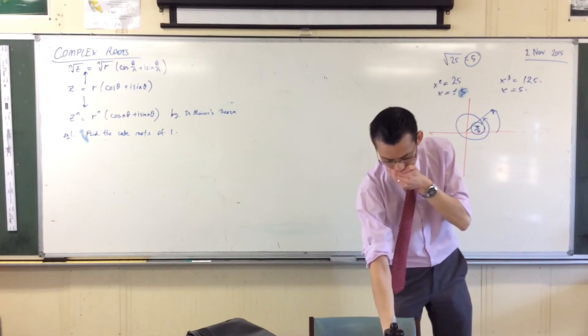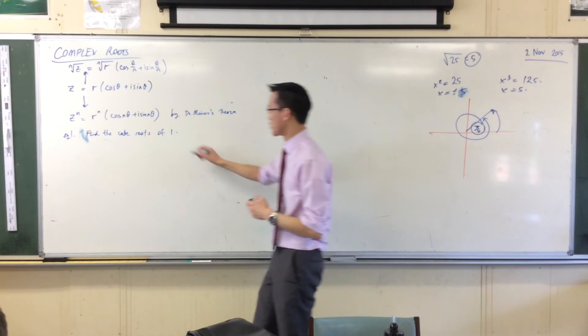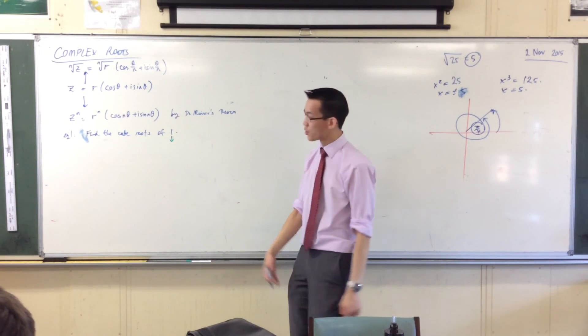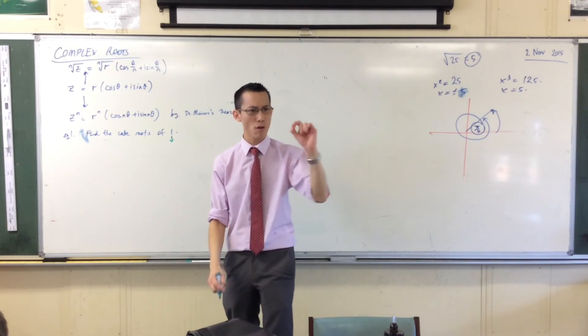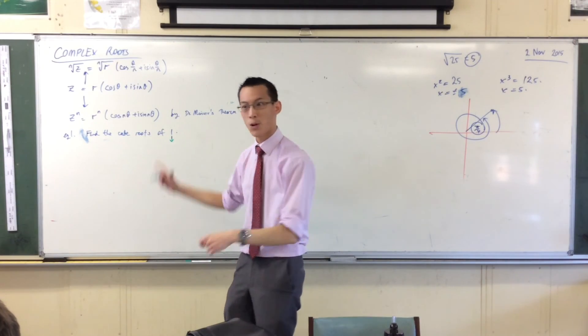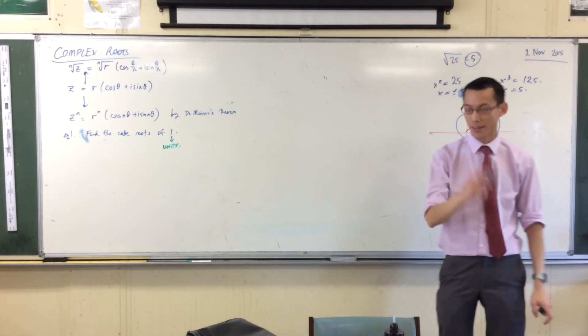Now, just a little side note. The number one is an important number, just like it's an important number in the unit circle and that kind of thing. So in the context of complex numbers, we give it another name, just like zero has the name origin. We call one unity, as in units, as in one.